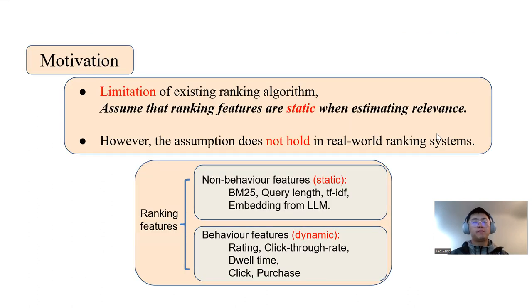Existing Learning to Rank methods usually assume that ranking features are static when estimating relevance. However, this assumption does not hold in real-world ranking systems. For example, we can group ranking features into two groups. The first group is non-behavior features which are usually static, like BM25, query length, TF-IDF, or embeddings from some language model.